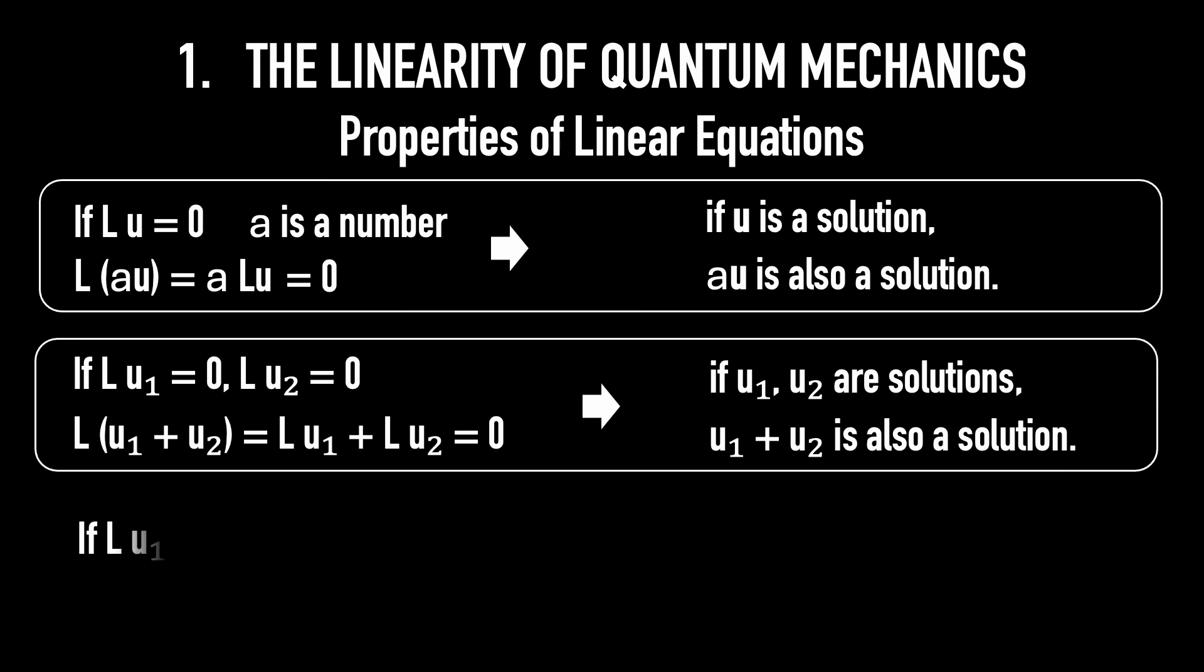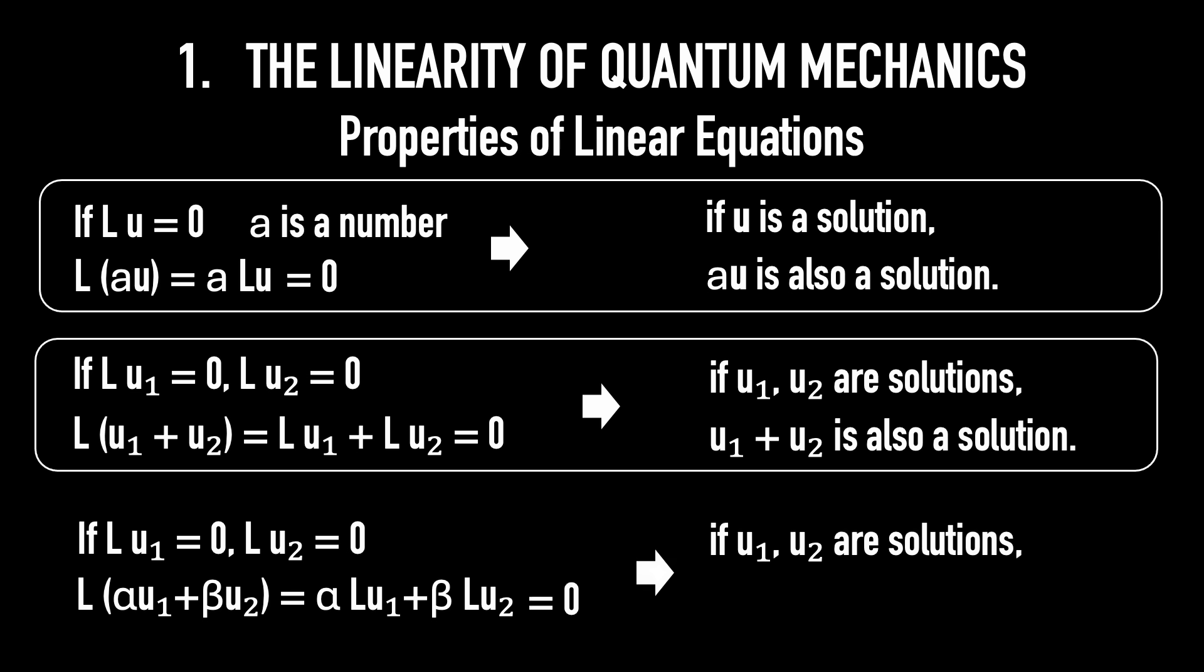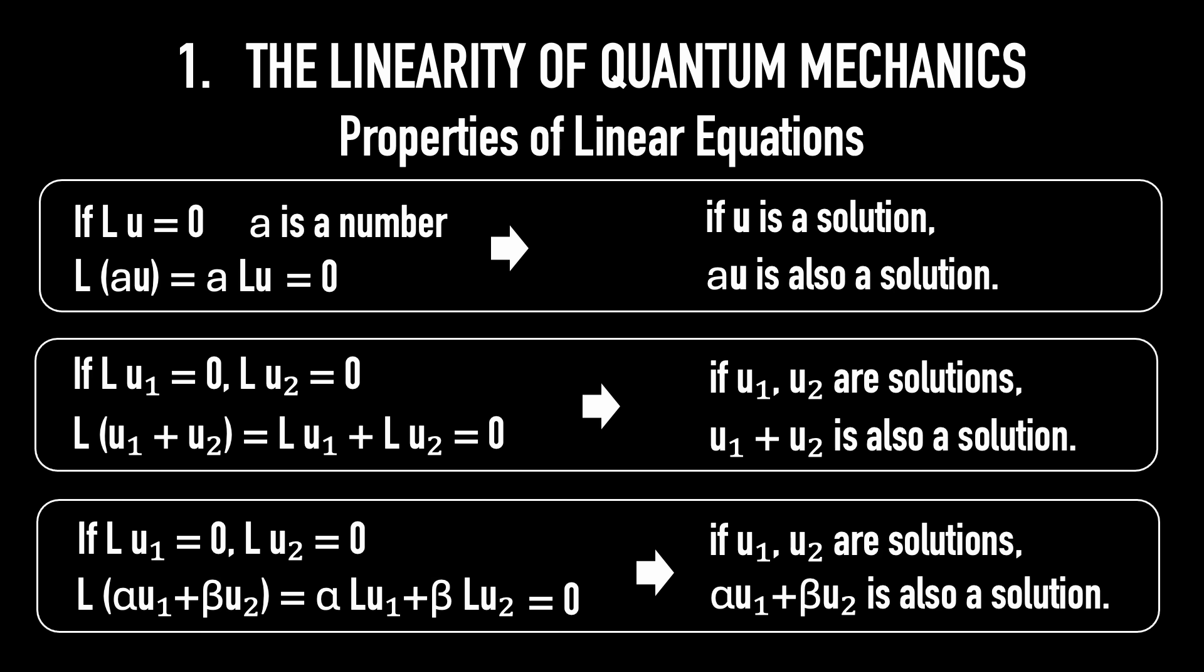If L of U1 equals 0 and LU2 equals 0, and alpha and beta are numbers, then L of alpha U1 plus beta U2 equals alpha L of U1 plus beta L of U2, which equals 0. In the next slides, I will show you how to determine the linear operator L and how to use these properties.